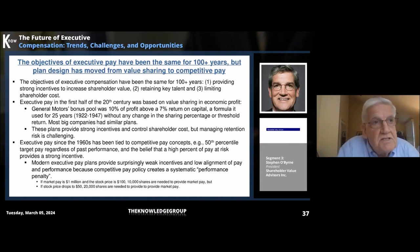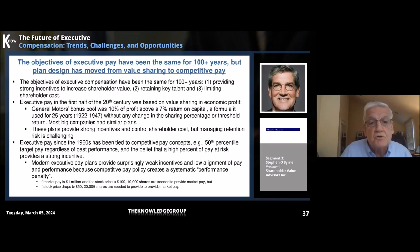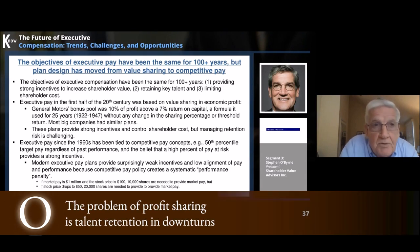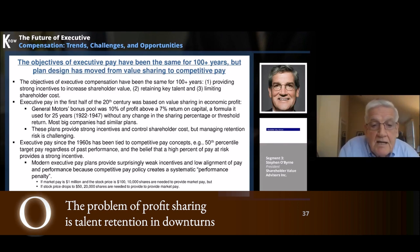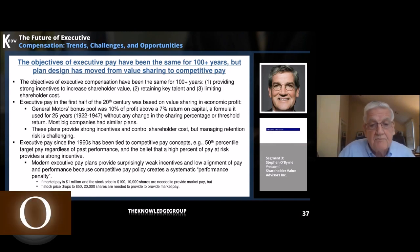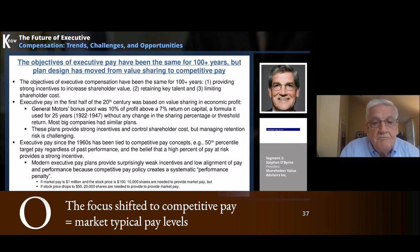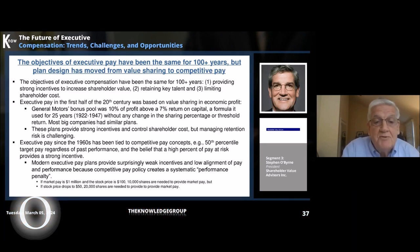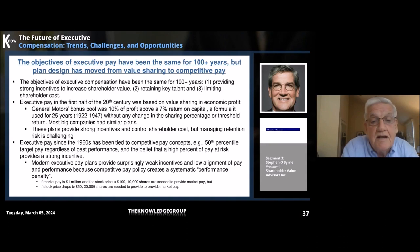Since the Second World War, executive pay has really shifted to a much stronger focus on retention and cost, and really shifted to competitive pay concepts — for example, the notion of 50th percentile target pay. Companies used competitive pay concepts to guide pay, together with the reliance on a high percent of pay at risk as a way to create a strong incentive. The thinking is that if you don't allow target pay to fall below the 50th percentile, you'll assure retention. If you don't allow it to go above, you'll take care of shareholder cost. And if you have a high percent of pay at risk, that will ensure a strong incentive.